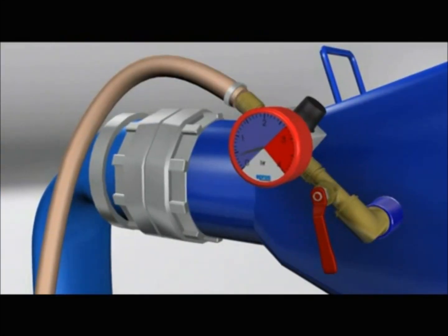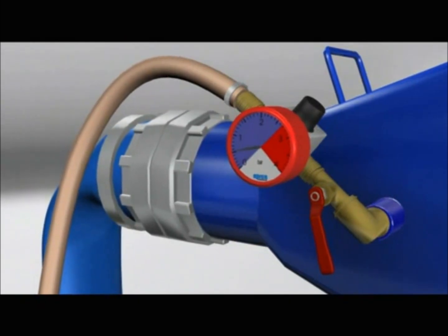Air pressure is then increased to allow the liner to invert into the pipeline.